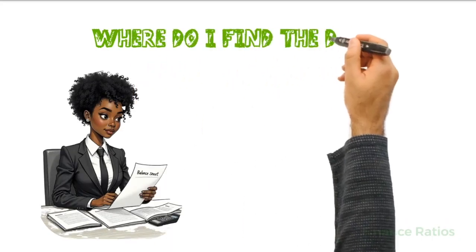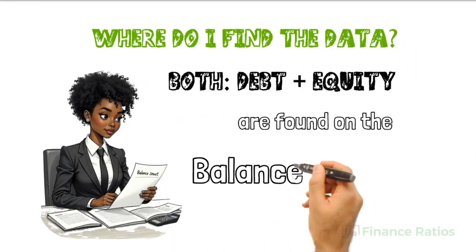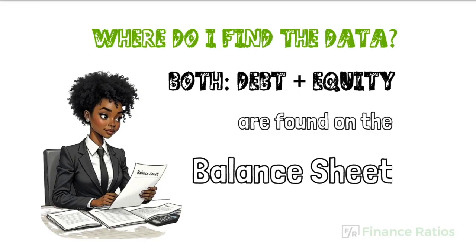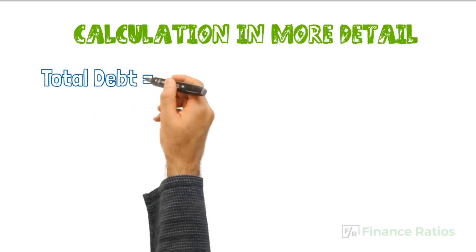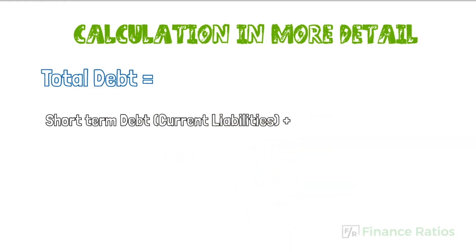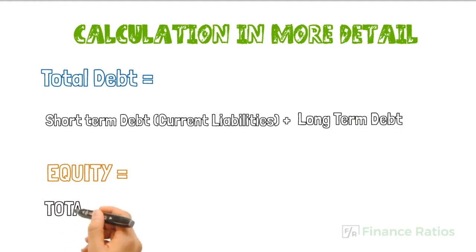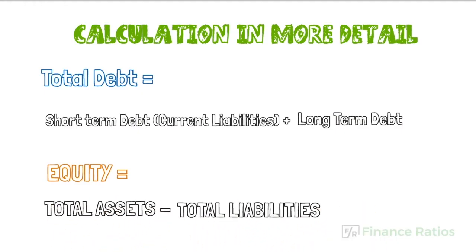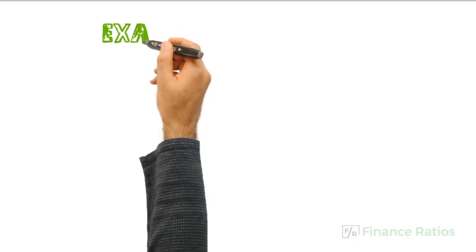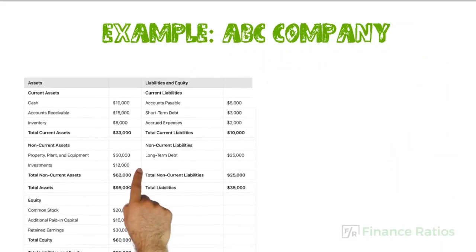So where do I find this data? Both debt and equity are found on the balance sheet. To calculate total debt, you add both short-term liabilities and long-term liabilities. To calculate equity, you take total assets and subtract total liabilities. Let's look at a more detailed example — here is a balance sheet of an ABC company.